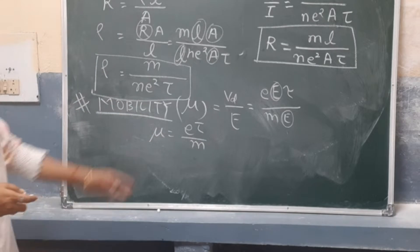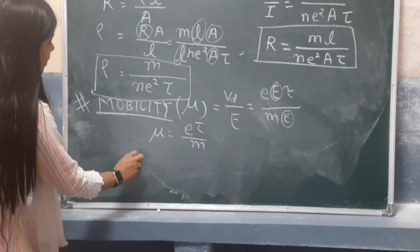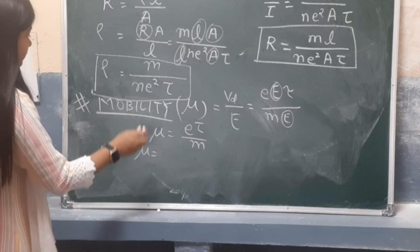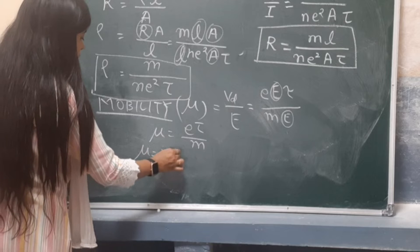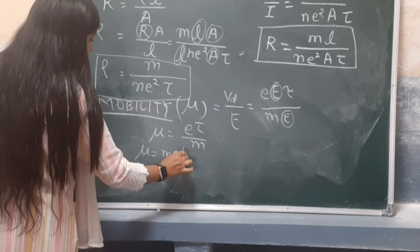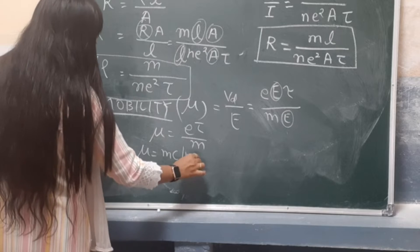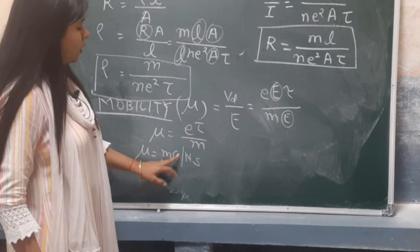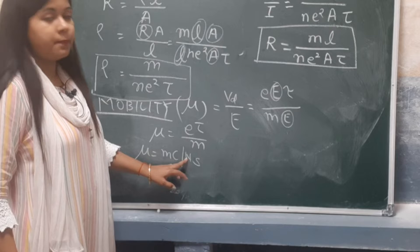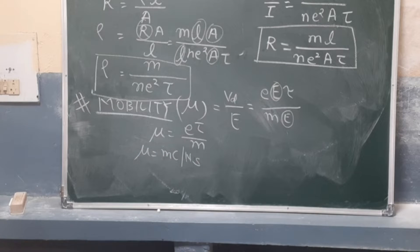What will be the unit of mobility? E is charge in coulombs, so the unit of mobility comes out to be meter² per volt-second, or equivalently, meter·coulomb per newton·second. This is the concept of mobility.